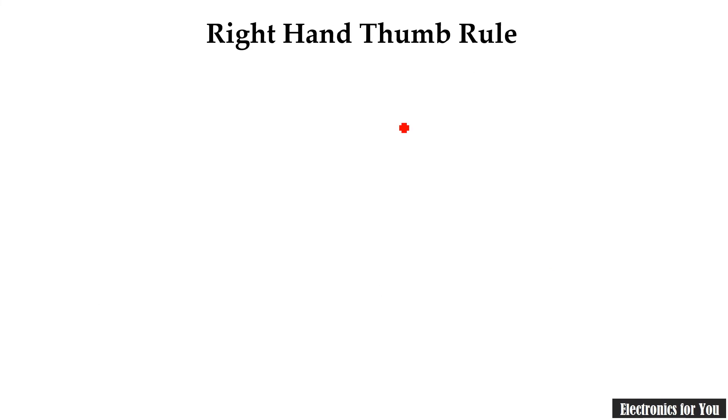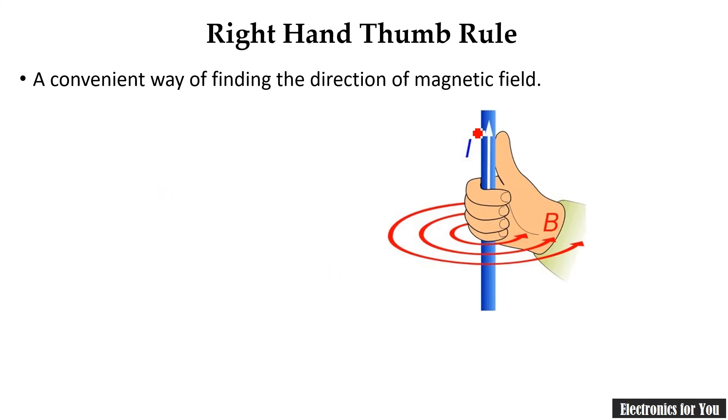Now let us talk about the direction of this magnetic field around the conductor and it is given by right hand thumb rule. The convenient way of finding the direction of magnetic field around the conductor. So what you have to do, you have to grab the conductor just like that, in the direction of current, you should put your thumb. Here thumb indicates the direction of current.